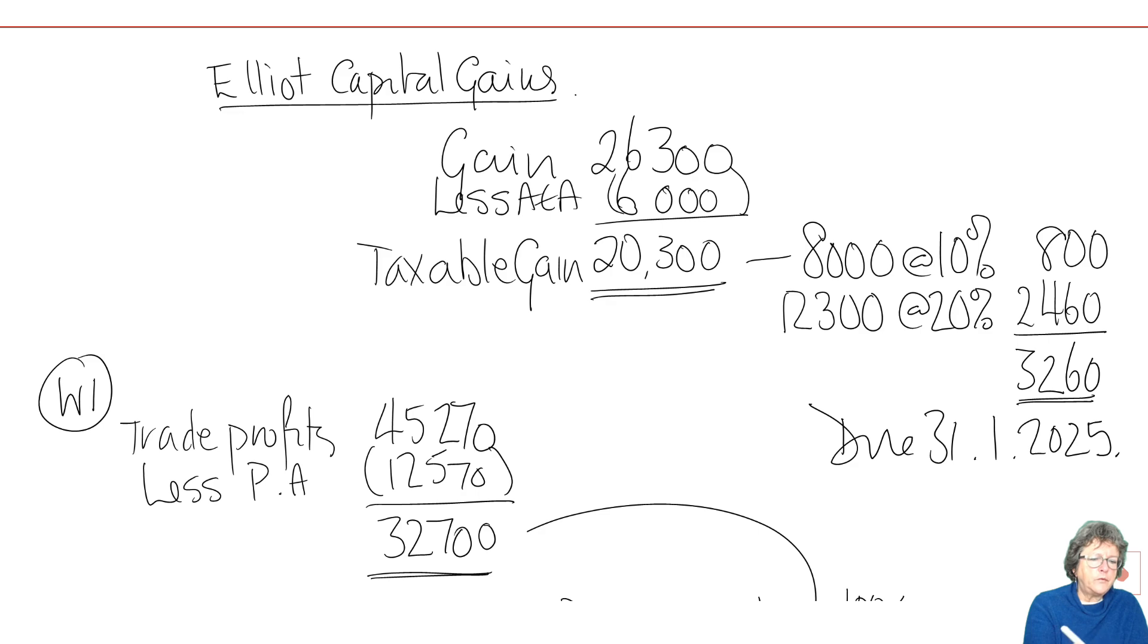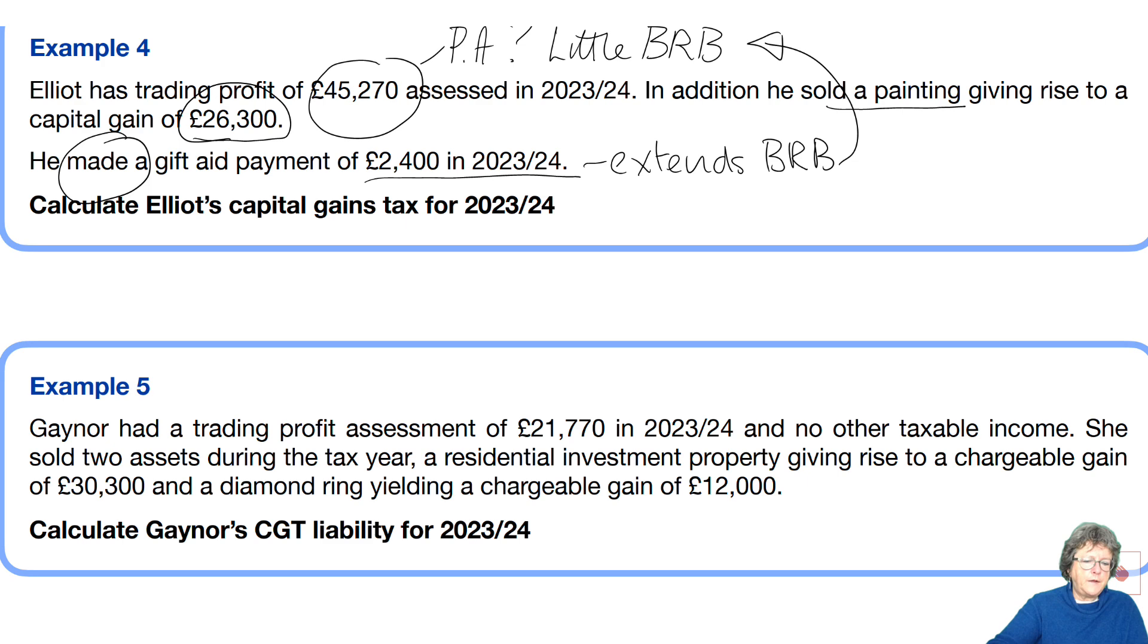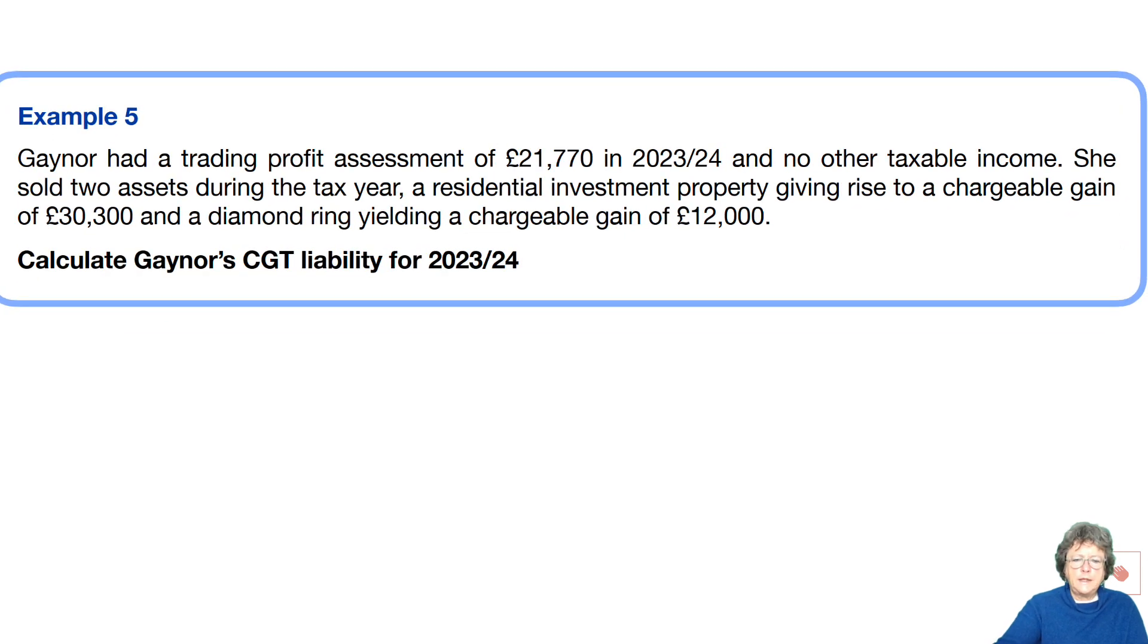Let's go back to the notes. So let's have a look at example number five. We have Gaynor here who has trade profits of £21,770 in 2023-24 and no other taxable income. Now she sold two assets during the tax year, a residential investment property giving rise to a gain of that and a diamond ring with a gain of that and we've got to work out her capital gains tax computation.